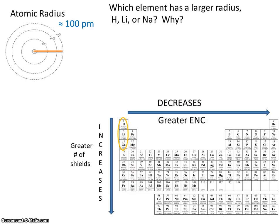However, there's also a greater number of shields as we go down. So as it turns out, sodium has the largest radius. It has a greater number of shields. It has more effective nuclear charge.